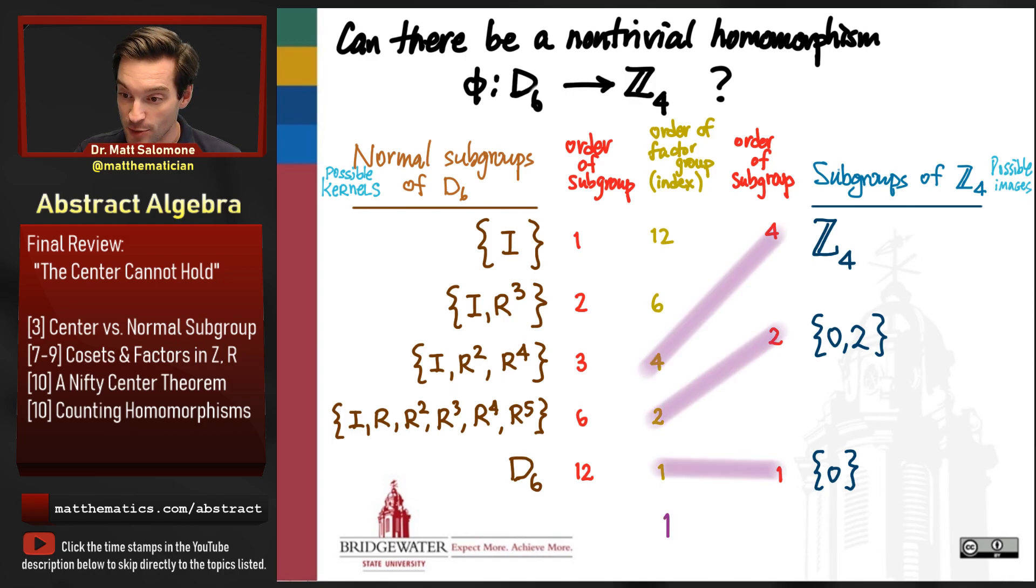Here are the orders of my candidate image subgroups. And the first isomorphism theorem tells me that if there is any homomorphism between these two groups, then the order of the factor group by the kernel has to agree with the order of the image subgroup in the target group. So there's three possibilities. Those orders are 4, those orders are 2, or those orders are 1.